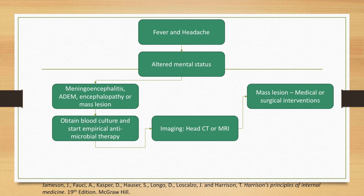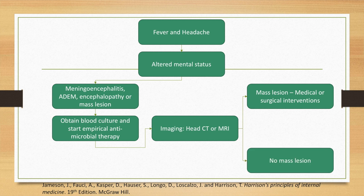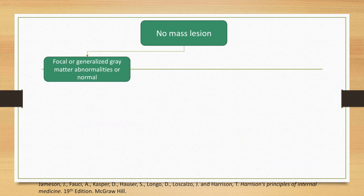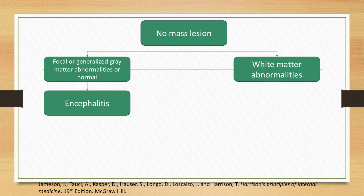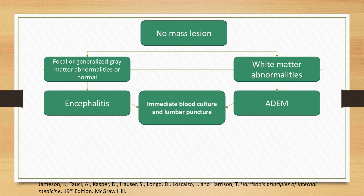If the head CT or MRI shows a mass lesion, this can be managed with medical or surgical interventions. If there is no mass lesion, we must look for focal or generalized gray matter abnormalities — the MRI may be normal, in which case it becomes encephalitis, or the MRI may show white matter abnormalities, in which case it becomes acute disseminated encephalomyelitis. In both conditions, we proceed with blood culture and lumbar puncture.